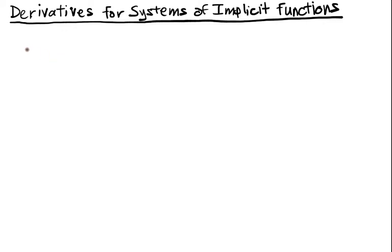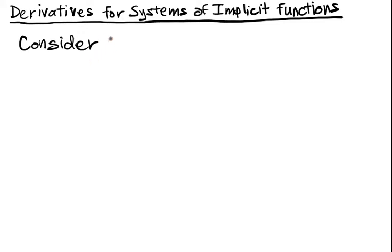In the last example we saw that we can compute derivatives for systems of implicit functions. I wanted to get another example so that you really see what's going on, because there we only had one free variable, and we might actually have multiple free variables. This is the simplest case where you have multiple constraints and multiple free variables — so consider this system of equations and constraints.